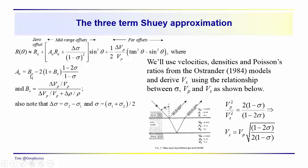The constants in here — a0 and b0 — are defined below, where b0 is used in the computation of a0. Delta sigma is sigma2 minus sigma1, and sigma without a subscript — or rho without a subscript — is just the average of the Poisson's ratios.